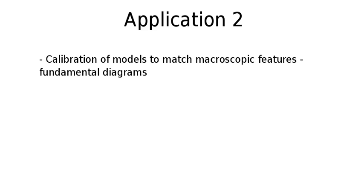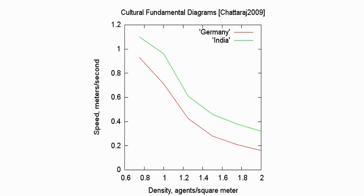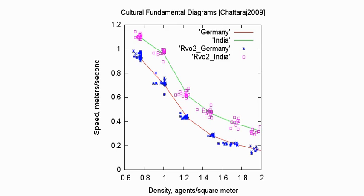In the second application, we calibrate models to match macroscopic features, in this case fundamental diagrams. Fundamental diagrams are used to monitor the relation between a crowd's speed and density. Usually as the density increases, the speed decreases. Here we have represented two fundamental diagrams showing the cultural differences between German people in red and Indian people in green. We have then matched the RVO2 model to these diagrams.